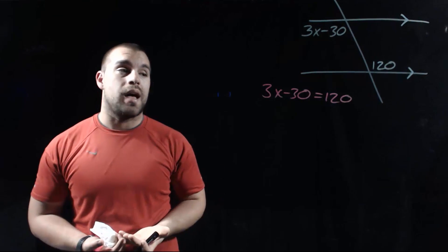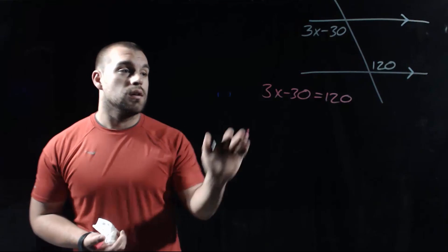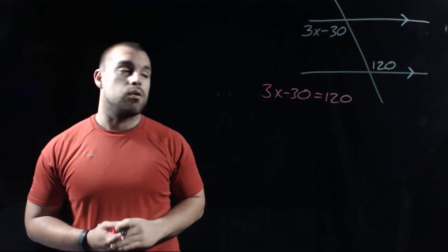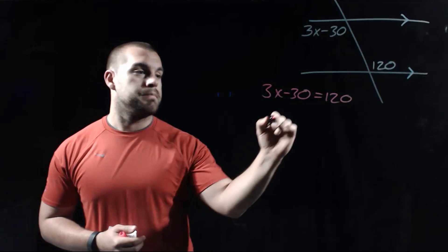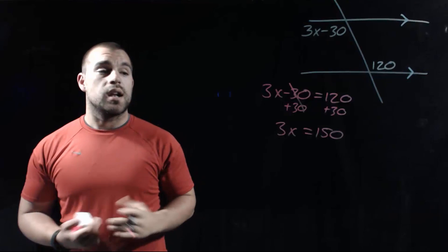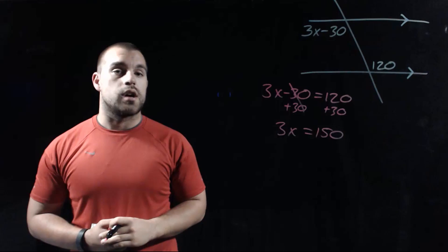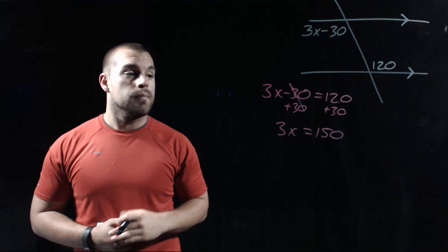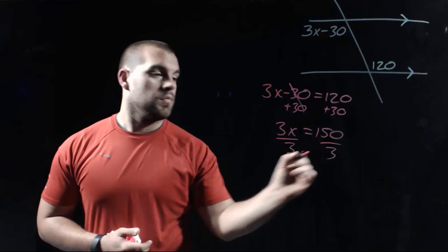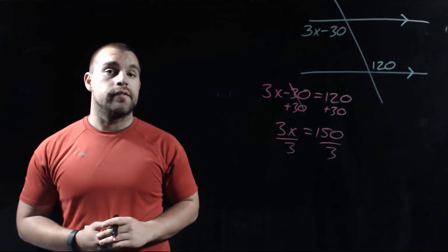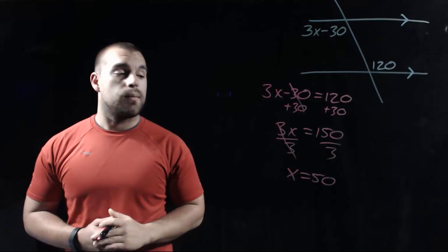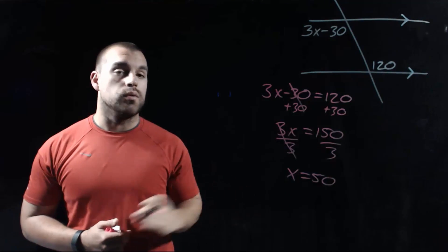Then we're just going to do some algebra solving. In order to get rid of the minus 30, we're going to add 30 to both sides, so we end up with 3x equals 150. In order to get rid of the 3 in front of our x, we'll divide both sides by 3, and we end up with an x value of 50.